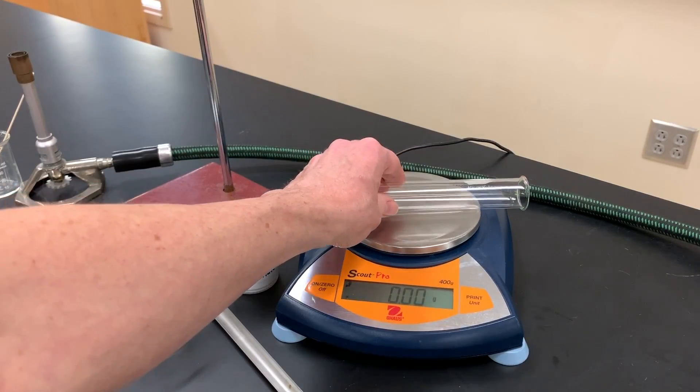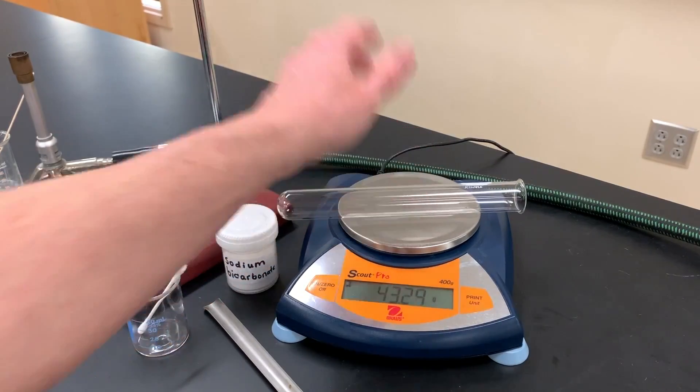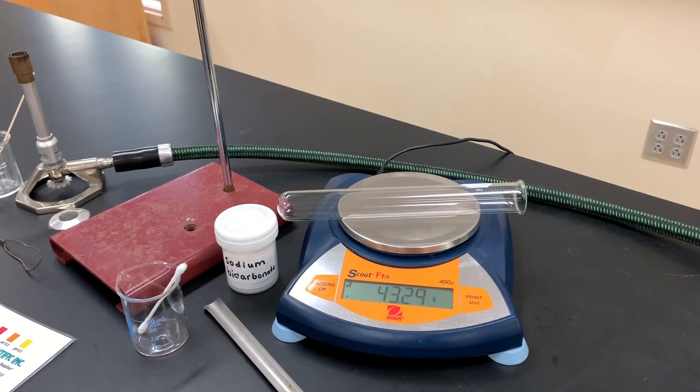Mine doesn't roll off so I'm able to put the test tube directly on there. Make sure right now that you record 43.29 grams in your data table as your test tube's mass.